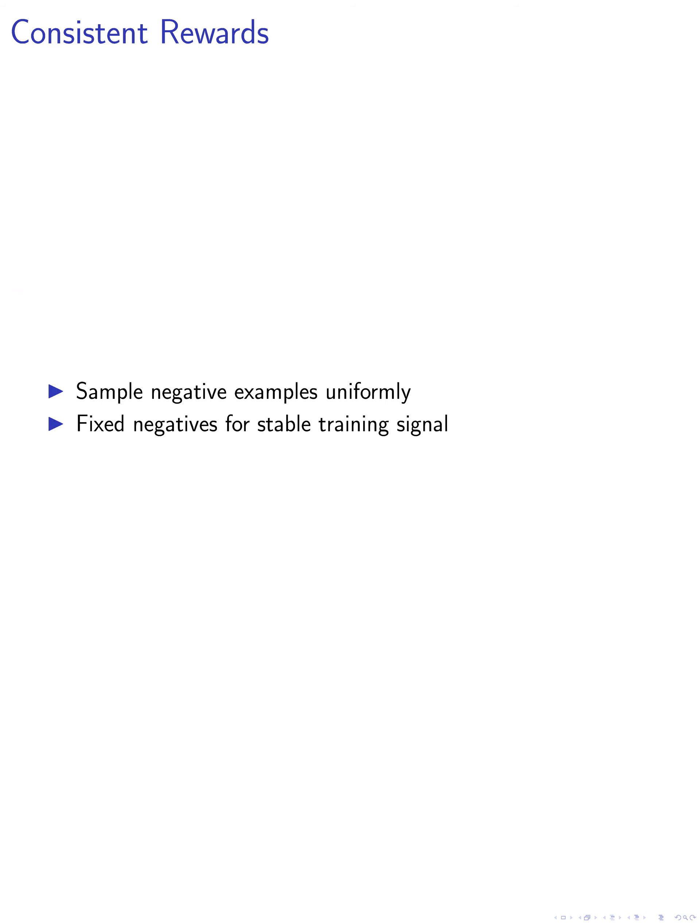To ensure consistent rewards during RL training, we sample negative examples uniformly from the task set and use them as fixed negatives throughout the training process. This helps avoid stochastic rewards and provides a stable training signal.